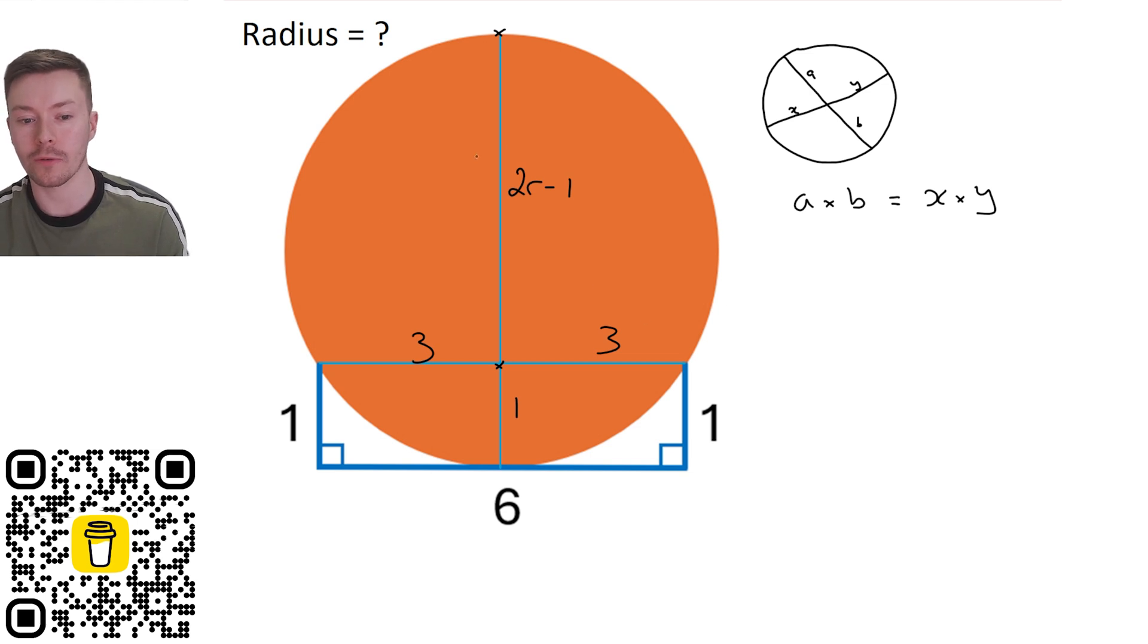Now, if we apply that to what we've got here with our intersecting chords, we've got three times by three. That's got to be equal to 2R minus 1 times by 1.